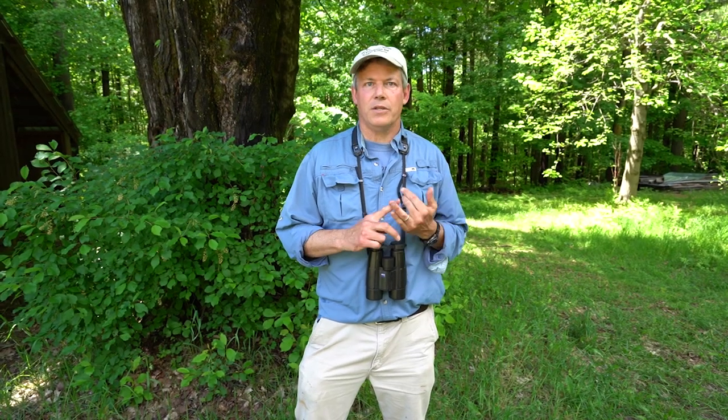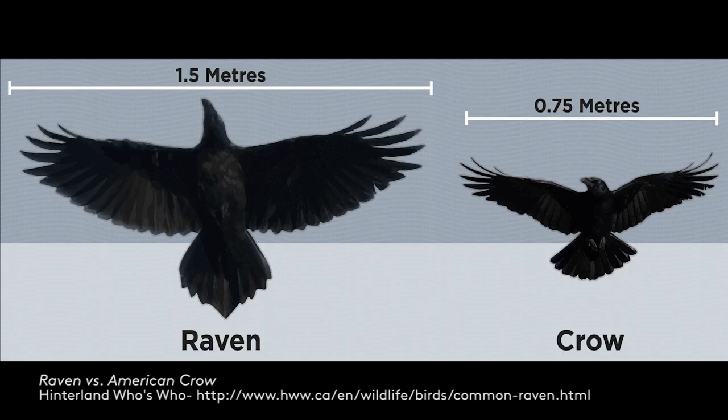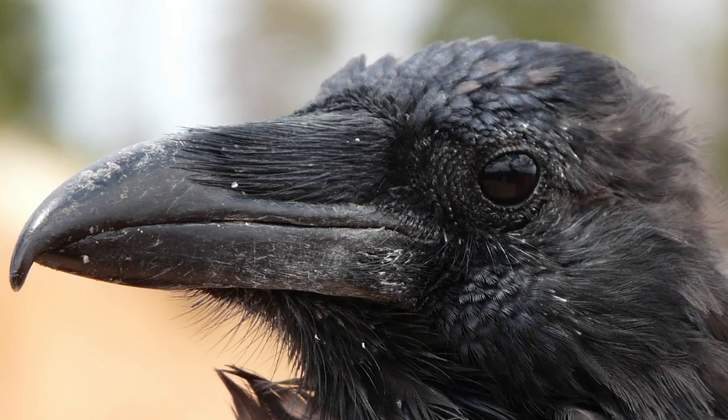The second is the size of the two species. The American crow is about a third smaller than the common raven. The common raven is much larger and has a much thicker bill than the American crow.